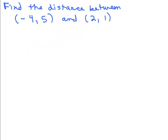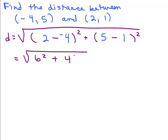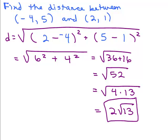Here's another example — put the video on pause and try it on your own first. Set it all up and fill in the numbers. Put the x values in one parenthesis — I like the bigger number first, though you could write negative 4 minus 2 — and 5 minus 1 for the y values. That gives 6 squared plus 4 squared, which is 36 plus 16, the square root of 52. Since 52 = 4 times 13, that simplifies to 2 times the square root of 13. That's your exact final answer.